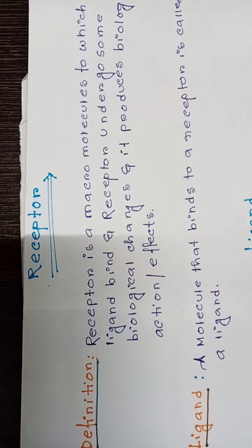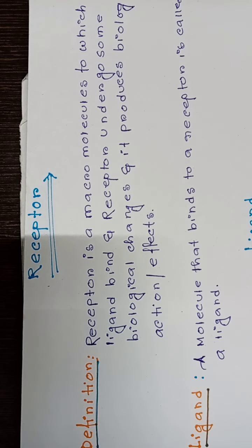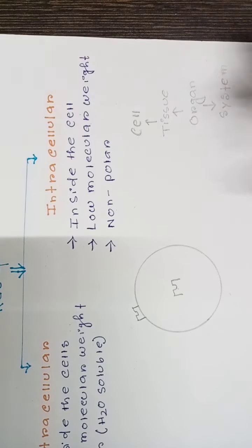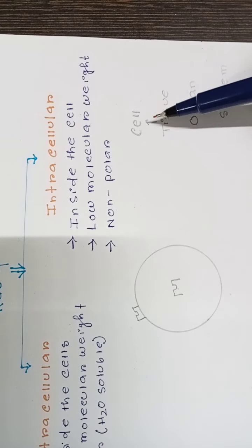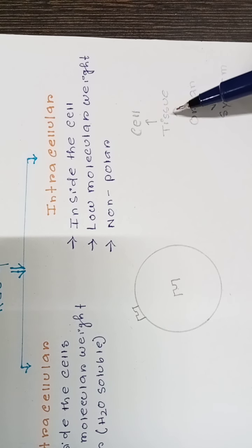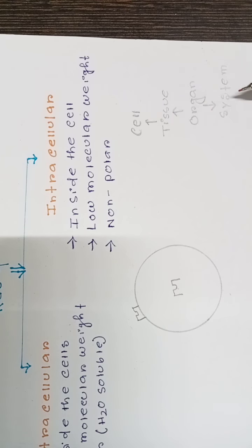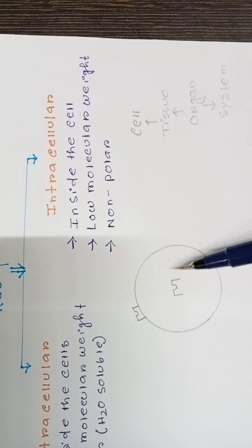Hello friend, welcome. Today I am discussing receptors — what is a receptor? First, I will focus on the fact that a number of cells form tissue, a number of tissues form an organ, and a number of organs form one system. So this here represents one cell.